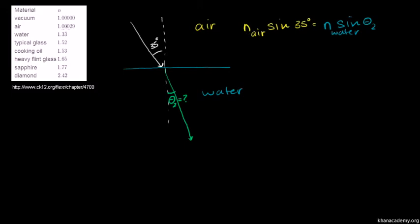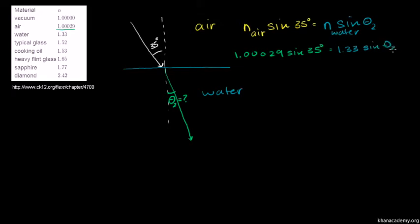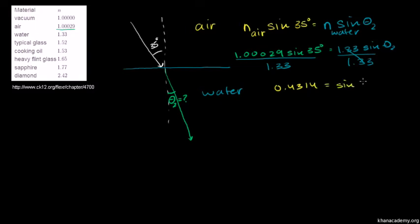The refraction index for air is 1.00029. So it's going to be 1.00029 times the sine of 35 degrees, equal to the refraction index for water, which is 1.33, times sine of theta 2. Now we divide both sides by 1.33. On the left-hand side I get 0.4314, equal to sine of theta 2.